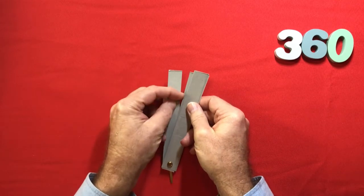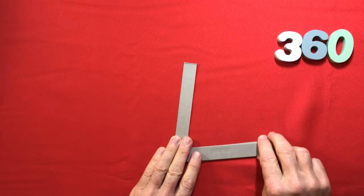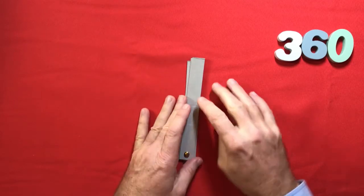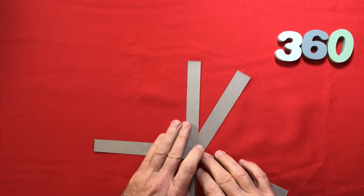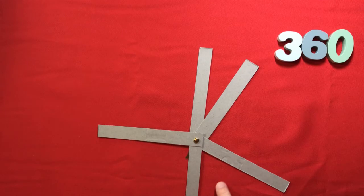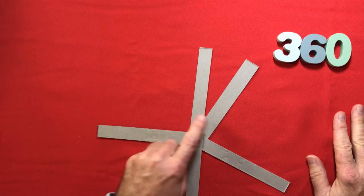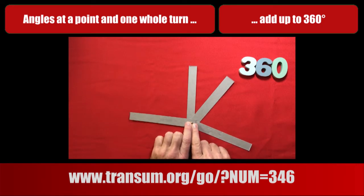Now if the angle has smaller arms, it doesn't mean that one full turn isn't 360 degrees anymore. I can still turn and the angles are still going to add up to 360 degrees for a complete turn. So if I make a few angles on the way around — an acute angle, almost a right angle, another acute angle, another right angle — all of these angles add up to 360 degrees. We call this the angles at a point, because each of the vertices of these angles are at the same point in the middle. The angles at a point add up to 360 degrees.